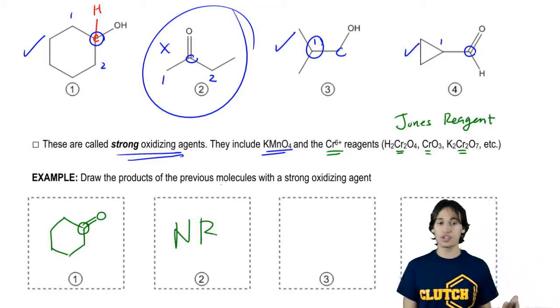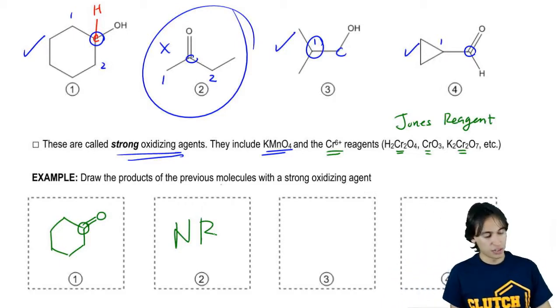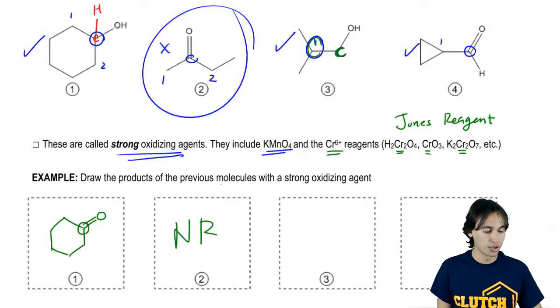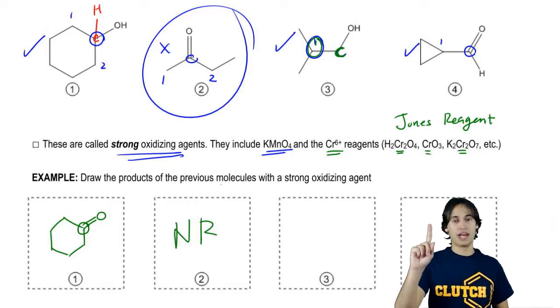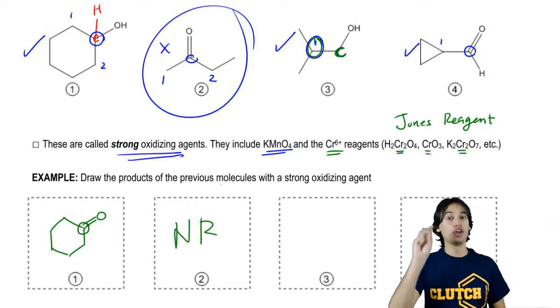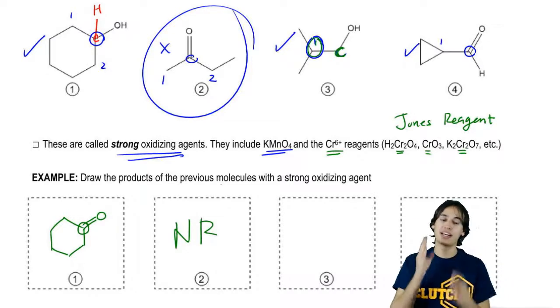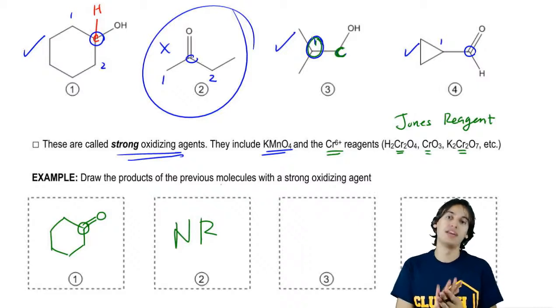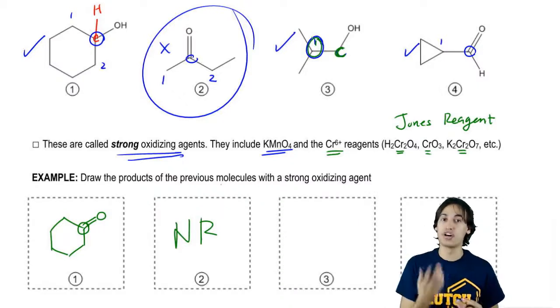Now the third one is interesting because we talked about how this carbon right here has only one bond to another carbon. So that means if it has one bond to carbon, how many oxygens can it possibly have? Three. So what that means is that I need to draw a version of this carbon that's going to have three bonds to oxygen.